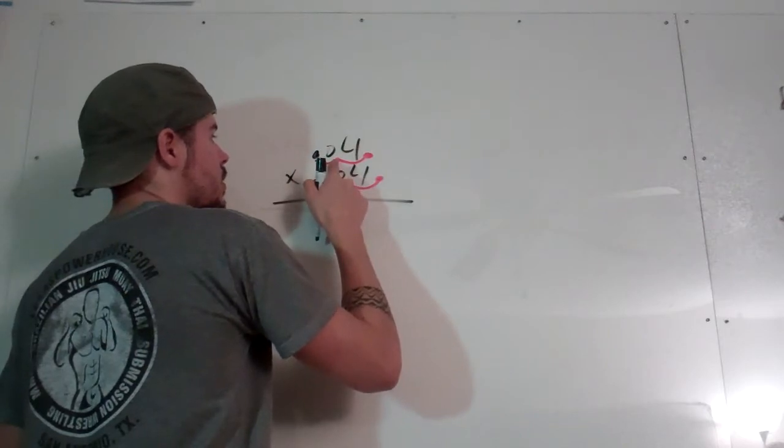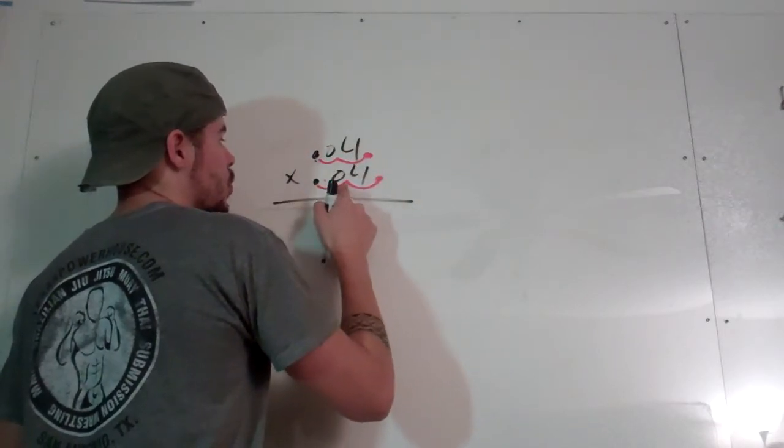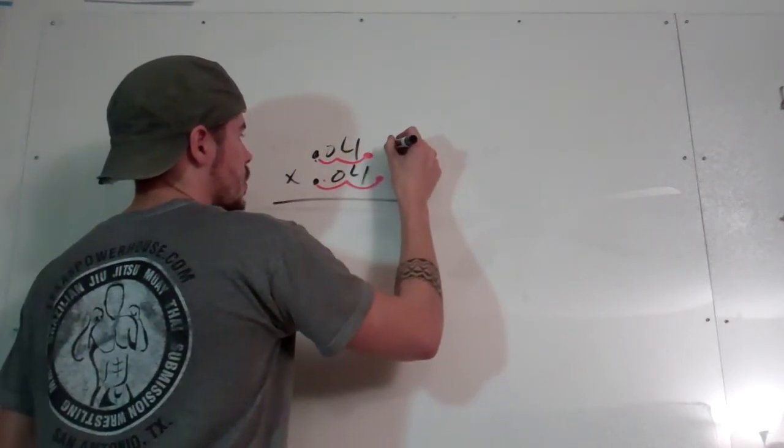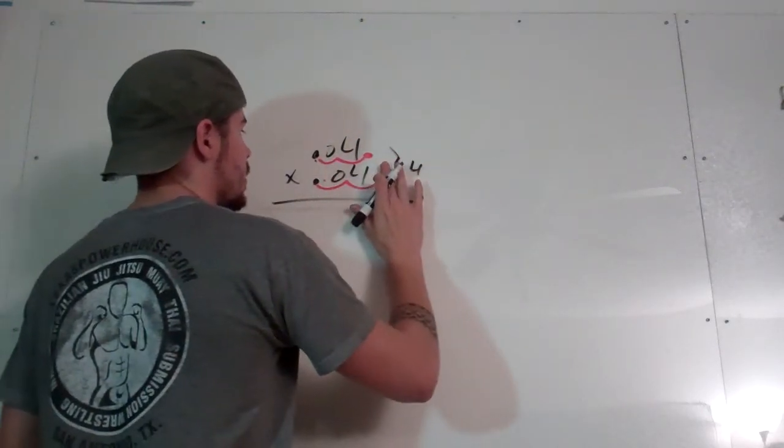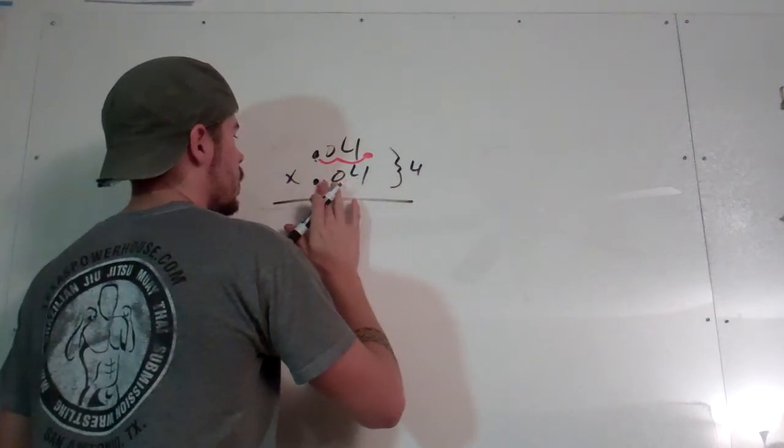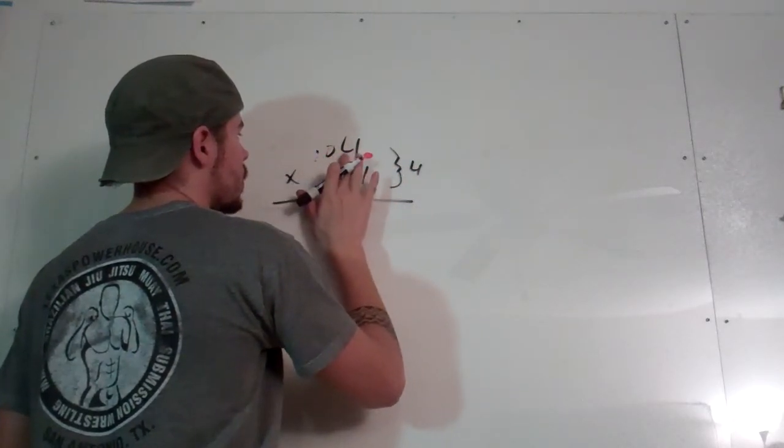Well, I moved it over one, two, three, four times. That's how many times I moved the decimal over so that I can write it like this.